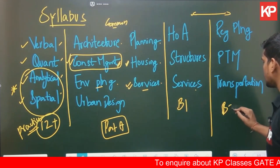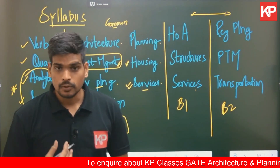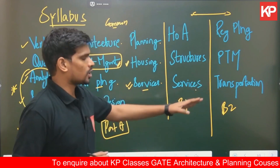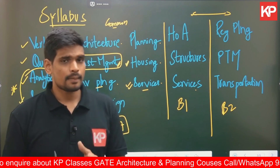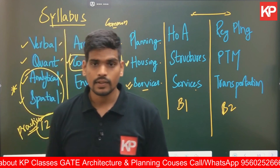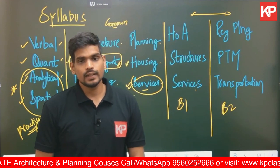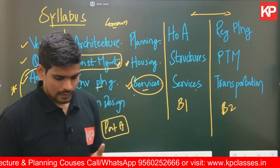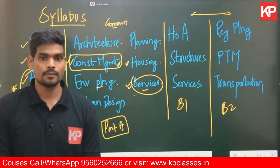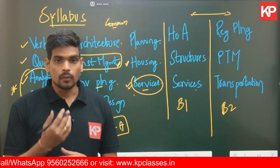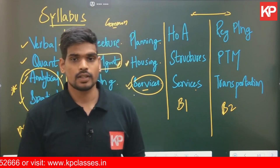Part B2 — the planning part — also has three sections. The first covers regional planning, including basics of planning and planning theories. The second covers planning technique management, including surveys, GIS, and related topics. The third covers advanced topics of transportation. Transportation is also mentioned in the common part's services section, but the common part deals with basic topics while Part B2 covers advanced transportation topics.